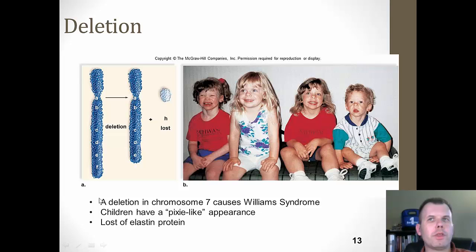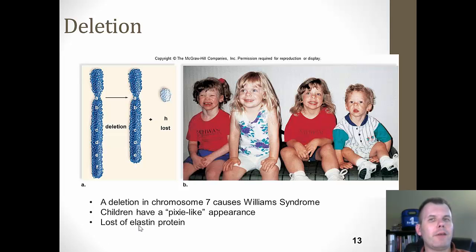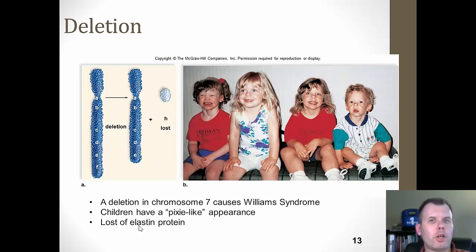One common deletion occurrence is called Williams syndrome, which is a deletion in chromosome 7 — you actually lose some of the genes, specifically the gene that codes for elastin, which keeps things flexible. These children have a pixie-like appearance with pointed noses and slightly different ears and cheeks, due to the loss of that protein. They can have developmental issues and also some cardiac and organ issues. There are a number of different syndromes like this out there caused by deletions, inversions, and other structural changes — just be aware that these things exist.